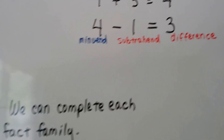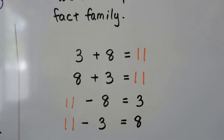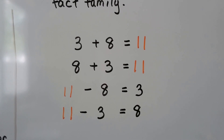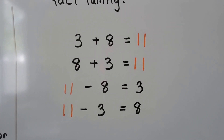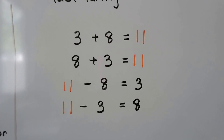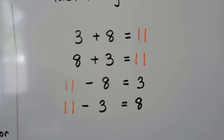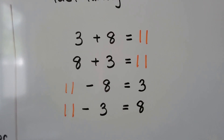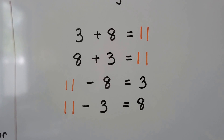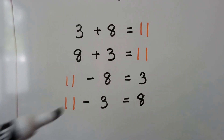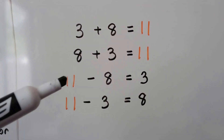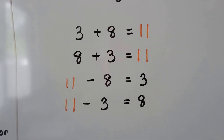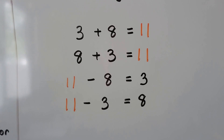And we can complete each fact family. We have 3, 8, and 11. We have two addition sentences and two subtraction sentences. 3 plus 8 equals 11. 8 plus 3 equals 11. And the sum of the addition sentence is the minuend of the subtraction sentence: 11 minus 8 equals 3, and 11 minus 3 equals 8.